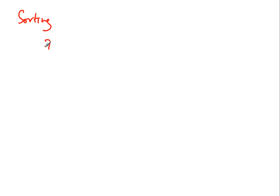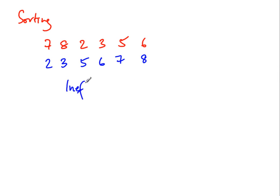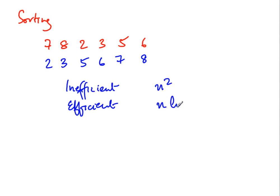To get a feel for this, let us look at a concrete example: sorting. We have a list of numbers and we want to rearrange them in sorted order, say ascending order. There are inefficient algorithms and efficient ones. The inefficient algorithms take time proportional to n², where n is the number of elements in the array, and the efficient ones take time proportional to n log n.